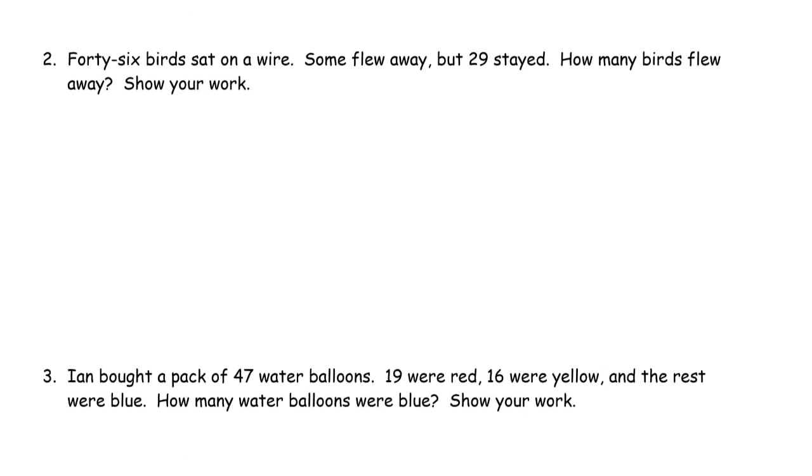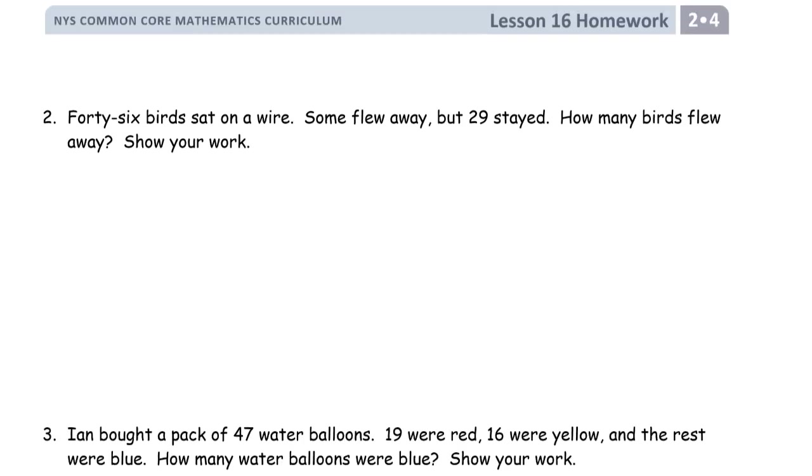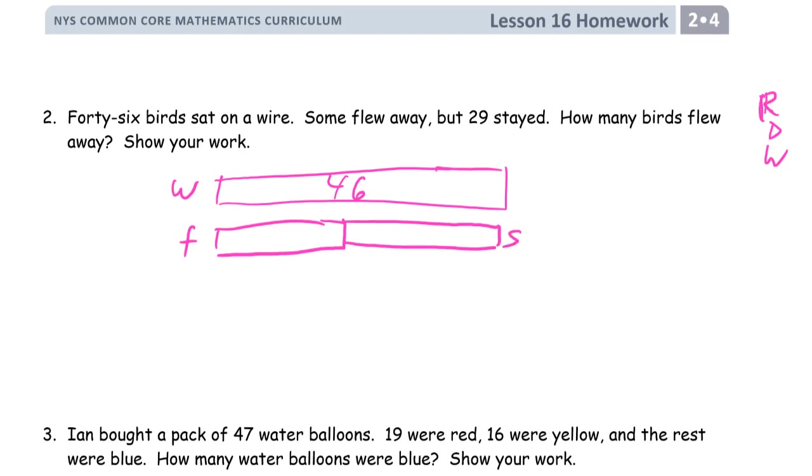46 birds sat on a wire. Some flew away, but 29 stayed. How many birds flew away? It's still RDW for all word problems every day. So I'm going to draw a tape diagram, because those are my favorite. And these are the birds on the wire, 46. Some of them flew away, F. And some of them stayed, S. We know how many stayed, 29. So how many flew away? 46 minus 29, the difference between those two numbers.